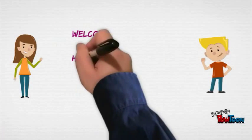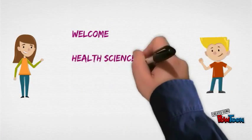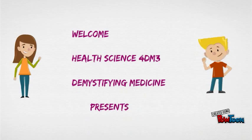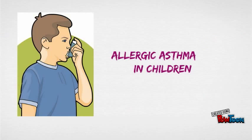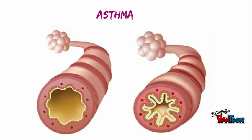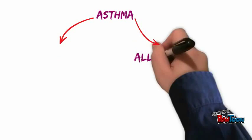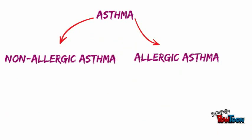Welcome. Health Science for DM3: Demystifying Medicine presents an information video on allergic asthma in children. Asthma is a disease characterized by recurrent episodes of reversible obstruction of airflow in the lungs. Asthma can be divided into two categories: allergic asthma and non-allergic asthma.